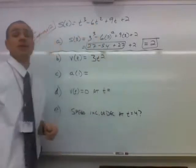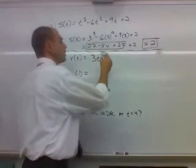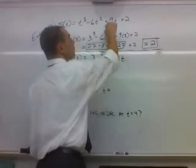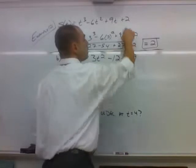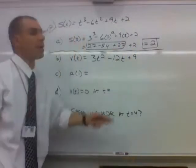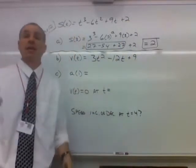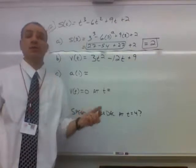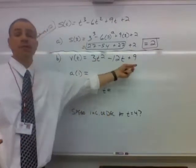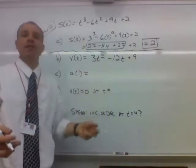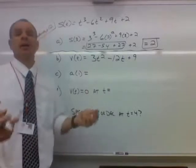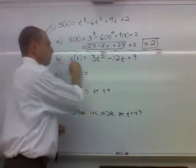The derivative of 6t squared would be 12t. And the derivative of 9t would be 9. And the derivative of 2 would be 0. So there's our instantaneous velocity. And that works for any value of t greater than or equal to 0. That's how fast we plug in that value. That's how fast the object will be traveling at that particular time. So there's part B.